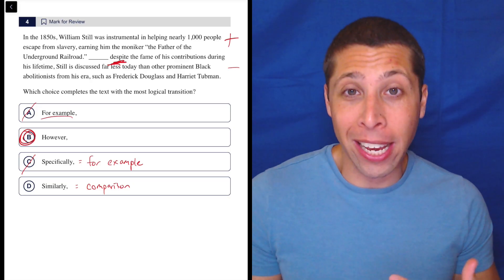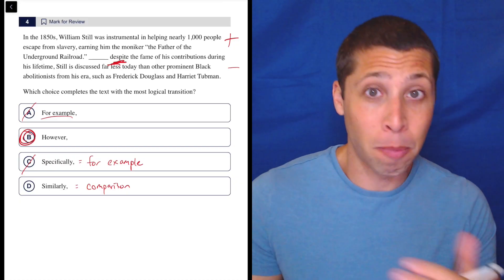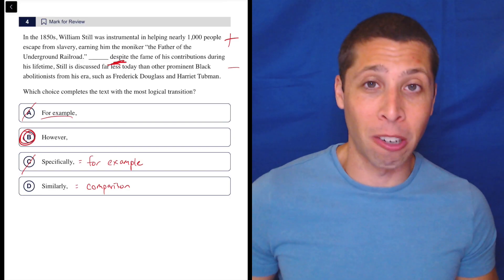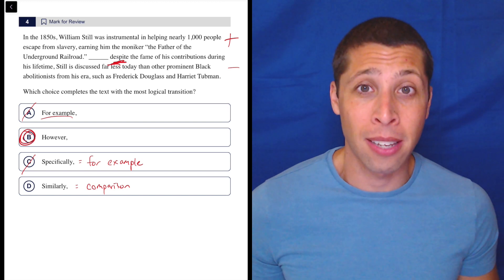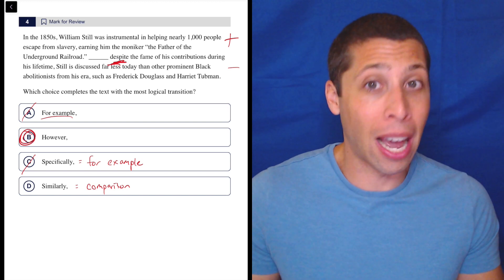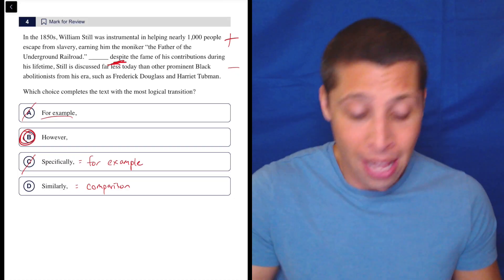If it were me writing it, I would just leave off the transition completely and just start the second sentence with despite the fame of his contributions. But we don't have that option, and I guess that's an important thing to remember for the transitions and the grammar. We're not writing the best possible sentence, we're dealing with the sentences and the blank and the choices that we're given. We've got to just pick from what's there.